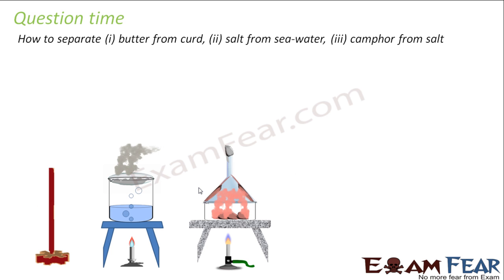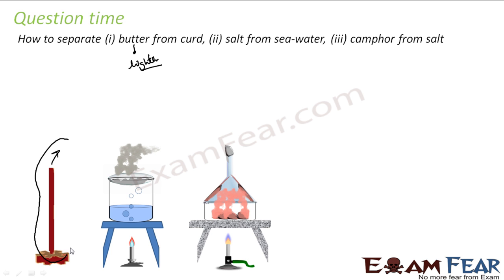The next question is how to separate butter from curd. Butter is actually lighter than curd, so there is a difference in density. We can use the centrifugation process or we can use a churner to separate them.